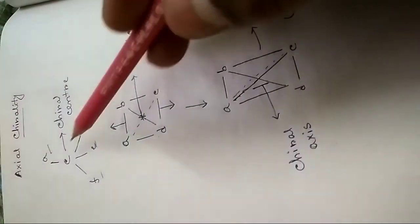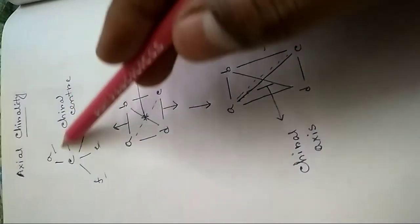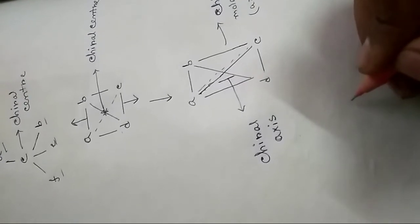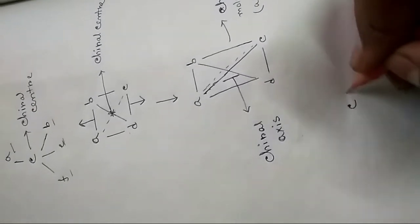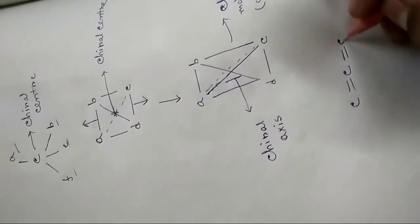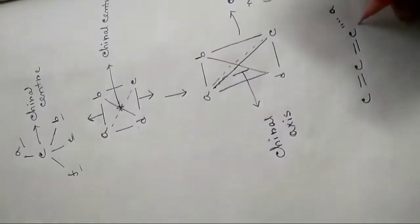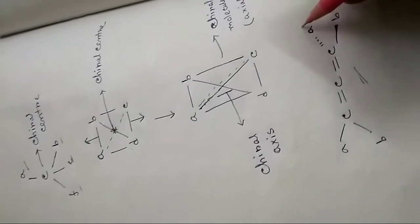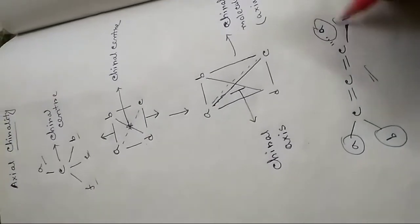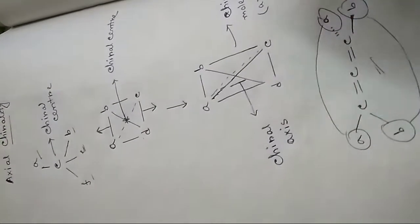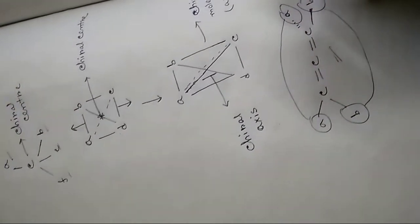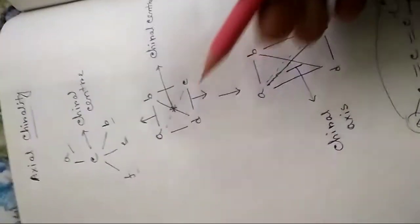For a carbon chiral center, all ligands must be different. But in the case of an axially chiral molecule — for example, the allene system — any two of the ligands may be the same, which is not possible for a chiral center.